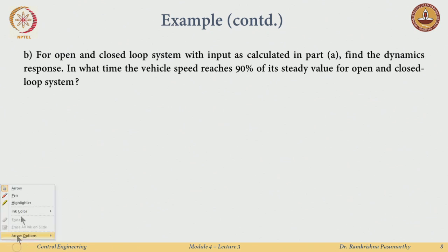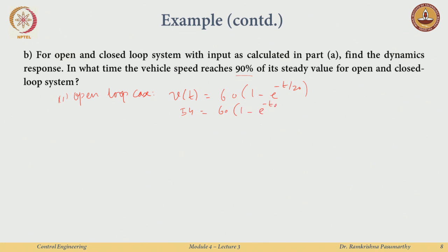Next, let us do transient analysis to find how quickly the vehicle reaches 90% of its steady-state speed in both open and closed-loop systems. In the open-loop case, v(t) = 60·(1 − e^(−t/20)). Setting this equal to 54 (which is 90% of 60) and solving for time t1, we compute t1 ≈ 46 seconds.